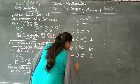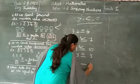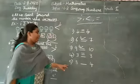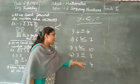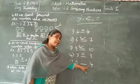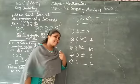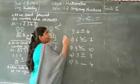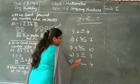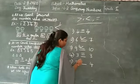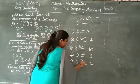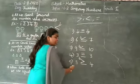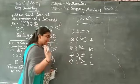And 8 dash 4. 8 is greater than 4. So the open side is towards 8 — open side indicates towards the greater number.